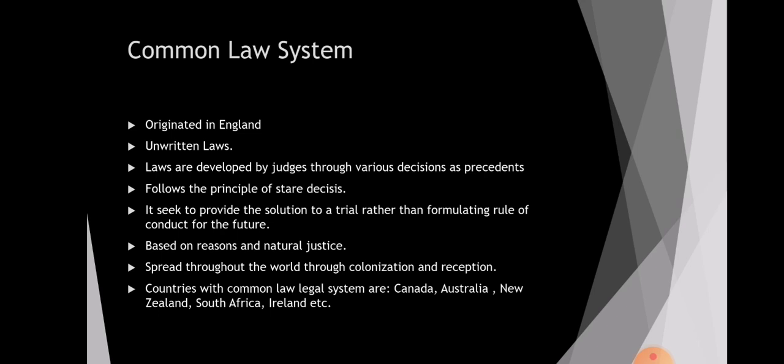The second family is the common law legal system, which originated in England. It consists of unwritten laws developed by judges through precedent in the process of settling disputes. It is based on the principle of stare decisis, meaning 'stand by what has been decided' — previous court decisions are binding upon all lower courts. This legal system is mainly focused on giving a solution to the present issue rather than formulating rules for the future. All decisions are based on the principles of natural justice and reason, including principles like 'no one can be a judge in their own case' and 'hear both parties.'